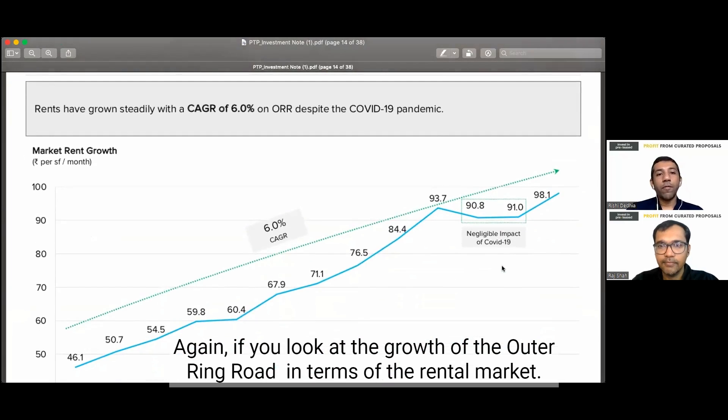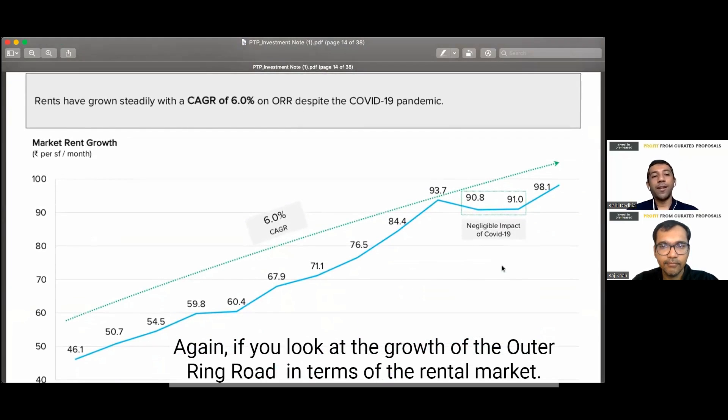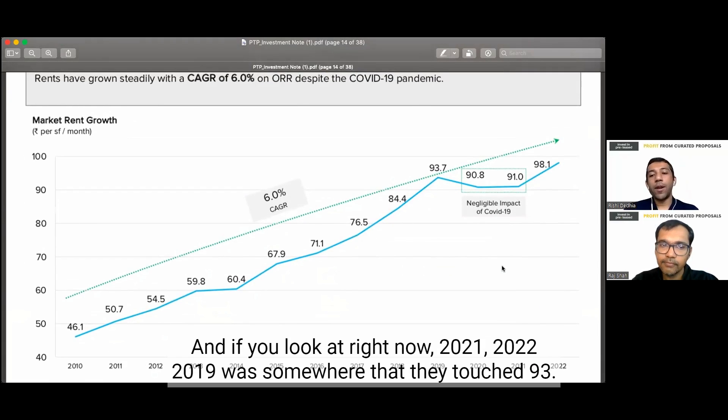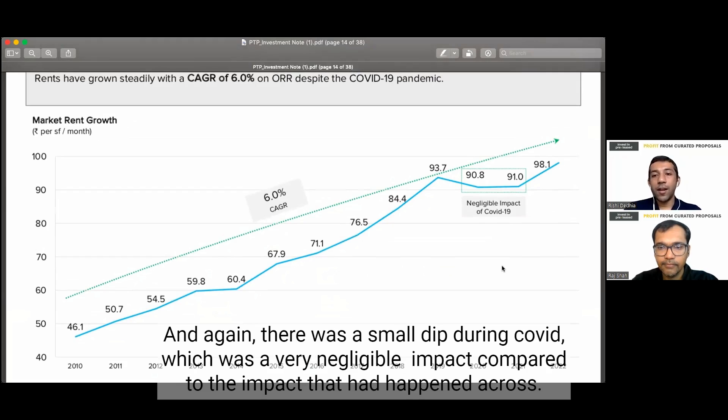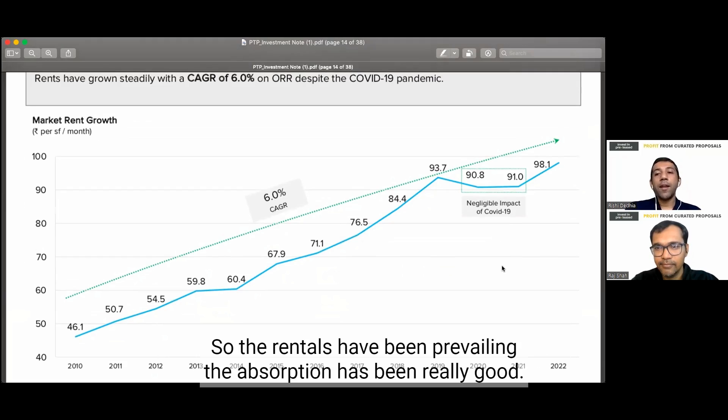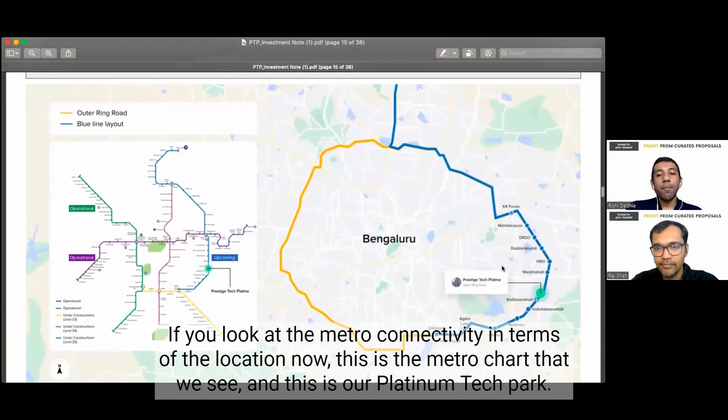Again, if you look at the growth of the outer ring road in terms of the rental market. So if you look at 2010, the rentals were roughly around 46. And if you look at right now, 2021, 2022, 2019 was somewhere, then they touched 93. And again, there was a small dip during COVID, which was a very negligible impact compared to the impact that had happened across. So it's a very small impact. So the rentals have been prevailing. The absorption has been really good.